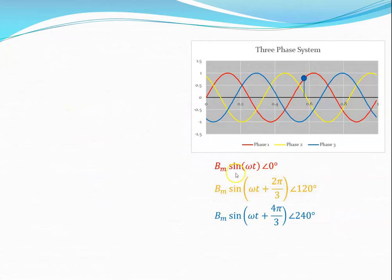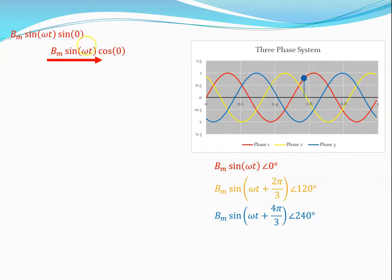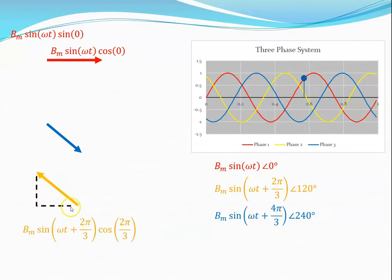We can represent them by three separate vectors. For the red phase, the horizontal component of that vector is BM sine(omega T) · cosine(0) and the vertical component will be BM sine(omega T) · sine(0). Similarly for the yellow phase, the horizontal component will be BM sine(omega T + 2π/3) · cosine(2π/3), because that's the mechanical construction of the stator.